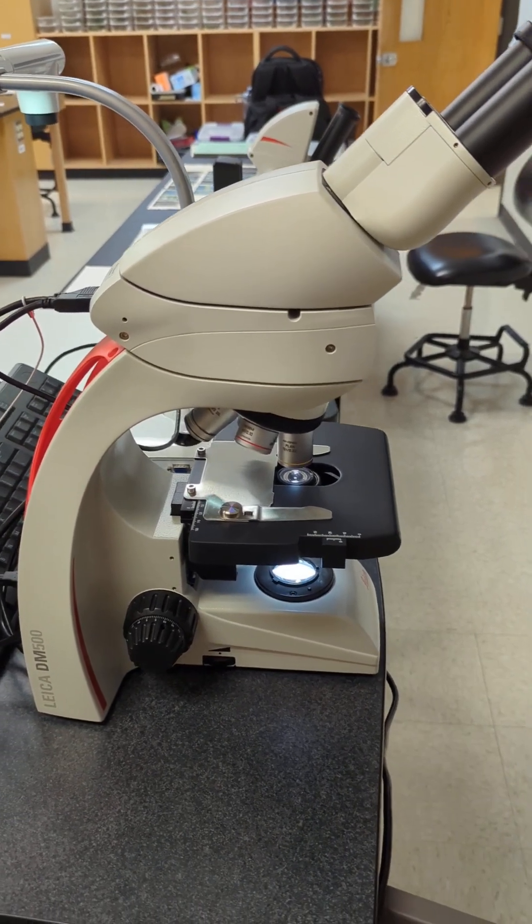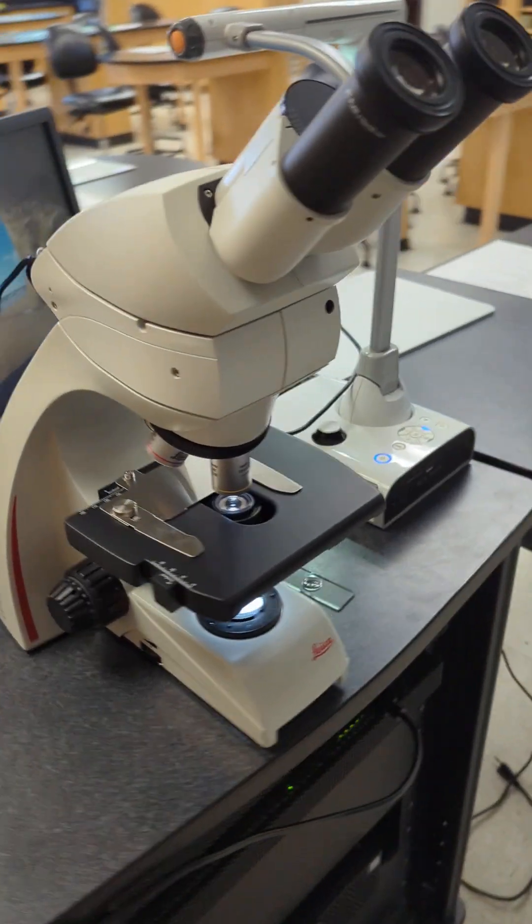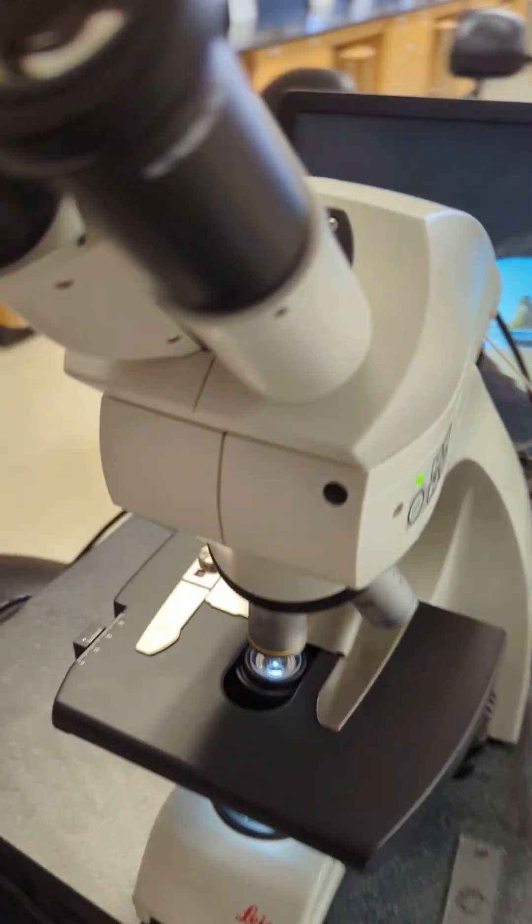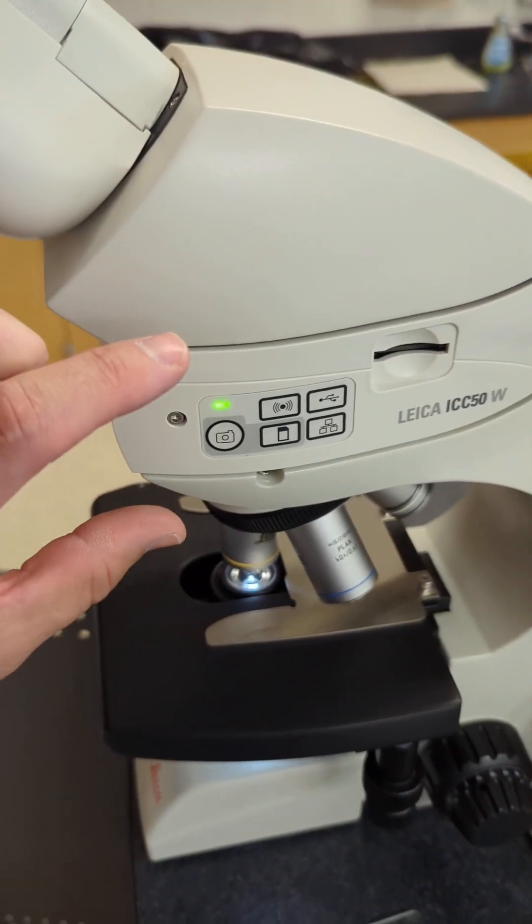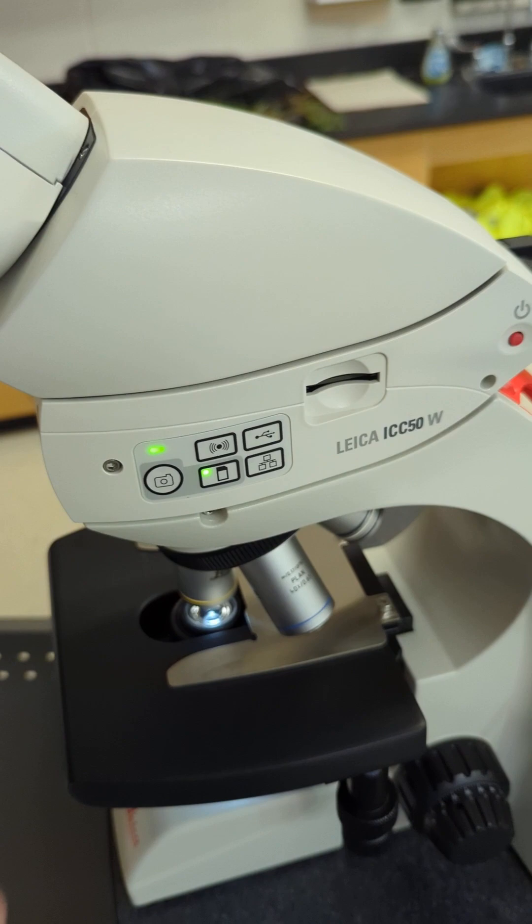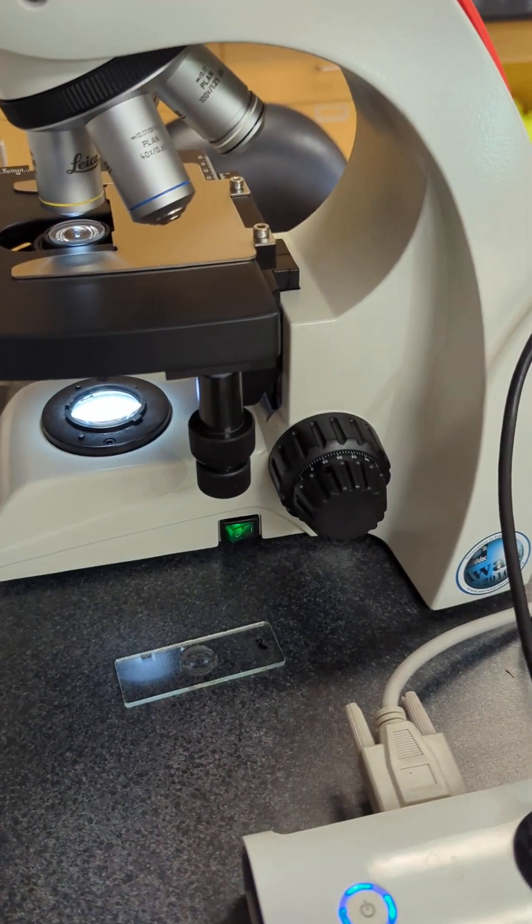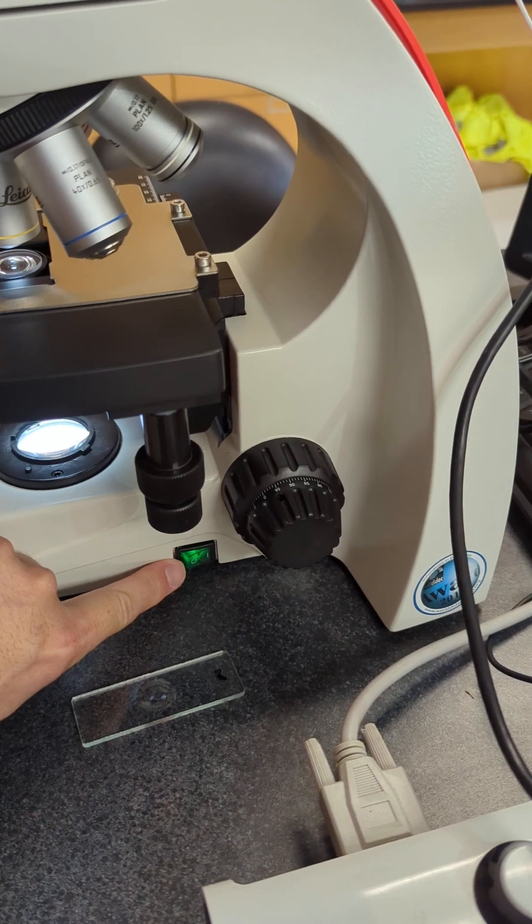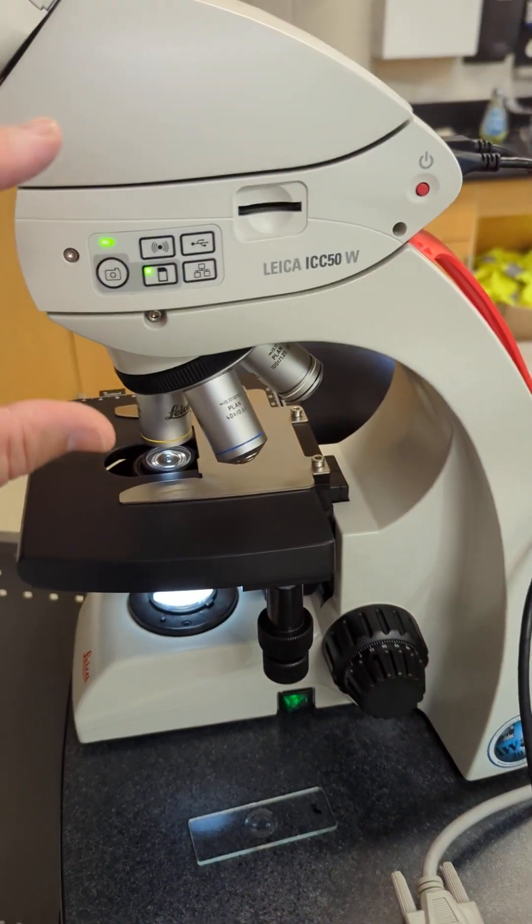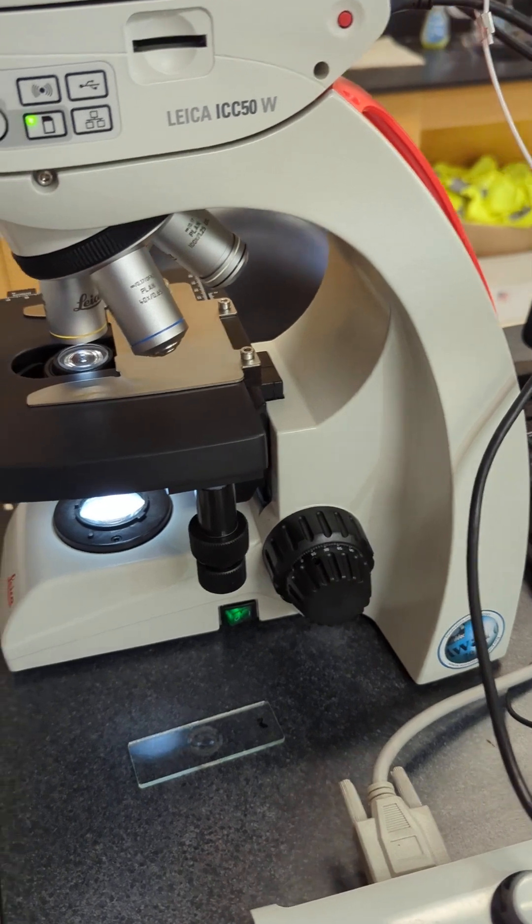Here we have the Leica DM500 with the ICC50 integrated camera. This portion here is the camera unit, and you can see I already turned it on. Down here is the power switch to turn on. The students won't have the camera unit up here, so they'll just turn the switch on.